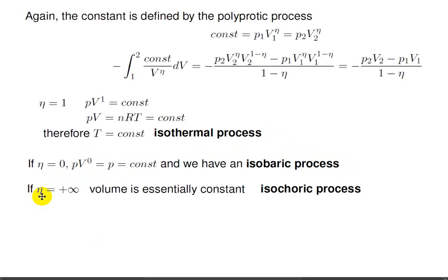If we let eta equals infinity, then volume is essentially constant, and that's an isochoric process. But this is easier to see if we make a graph of pressure and volume.